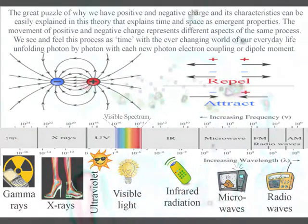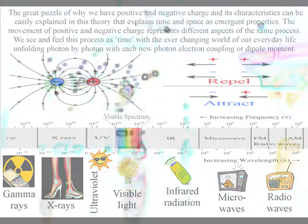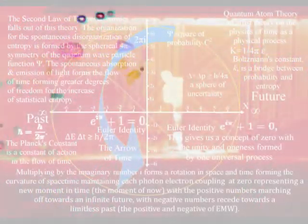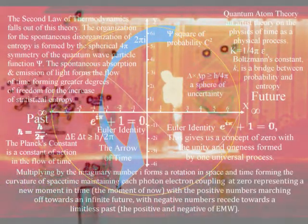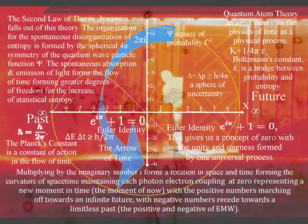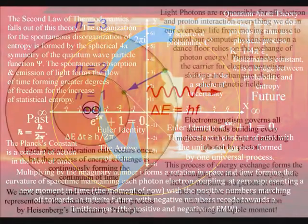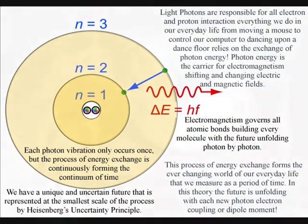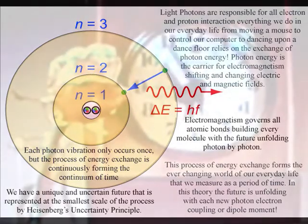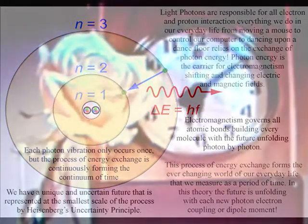Because the universe is never at absolute zero, there is always the spontaneous absorption and emission of light or photon energy. If our eyes were more sensitive to the different wavelengths of light, we would be able to see that everything is radiating electromagnetic waves continuously — forming what has been called the great dance of creation. Each photon vibration only occurs once, but the process of energy exchange is continuously forming the ever-changing world of our everyday life that we measure as a period of time.